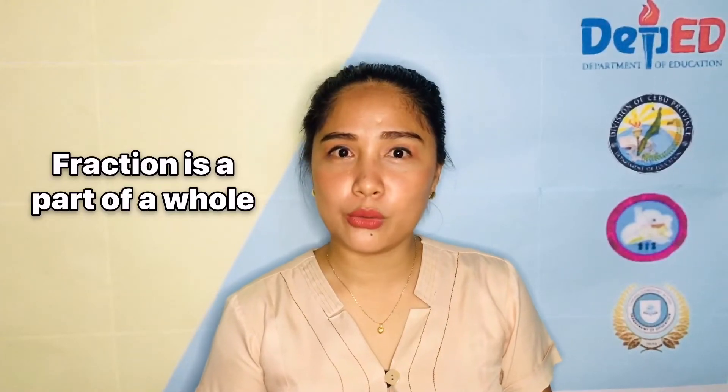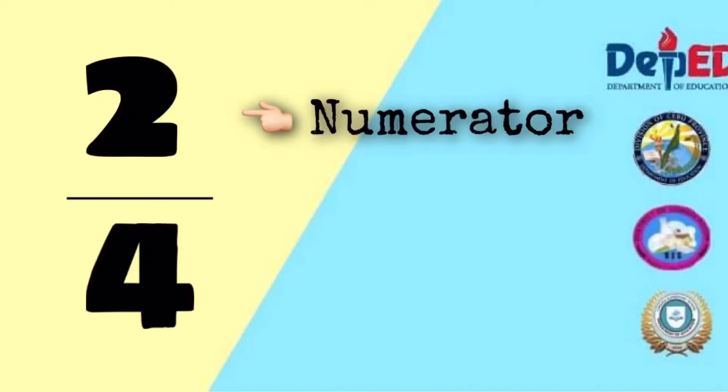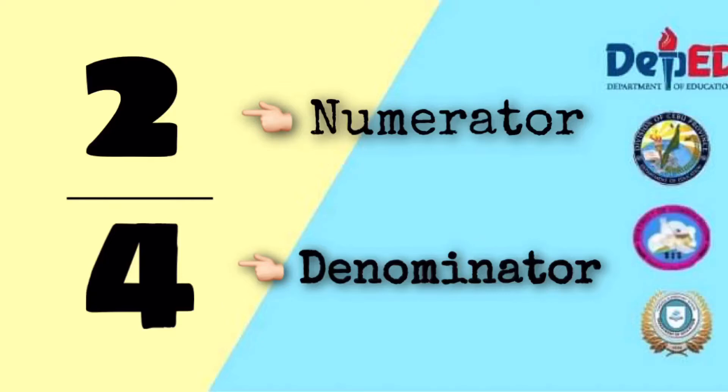A fraction is a part of a whole. We call the top number the numerator. We call the bottom number the denominator.